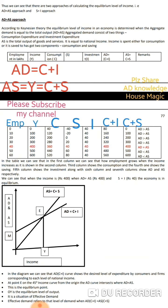The first approach is the AD equal to AS approach. According to Keynes' theory, the equilibrium level of income in an economy is determined when aggregate demand is equal to aggregate supply. Aggregate demand has two components: the first is consumption by households, and the second is investment by firms.